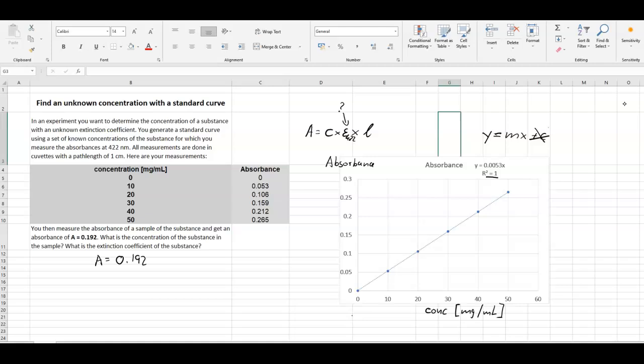And we can sort of estimate what would give, which concentration here would give an absorbance of 0.192. So we could say, well, 0.192 would probably be something like that. And we go horizontally at 0.192 and try to figure out the corresponding concentration here. So that would be this one here. So it would be between 30 and 40, maybe a little bit larger than 35. And the unit would be milligram per milliliter.